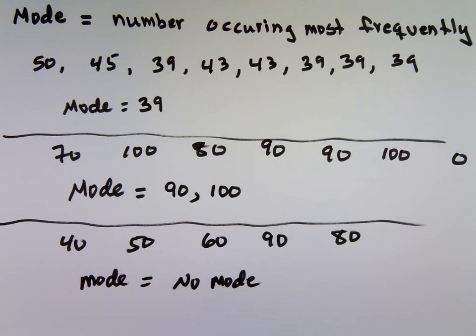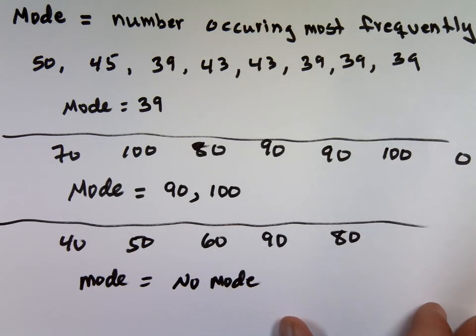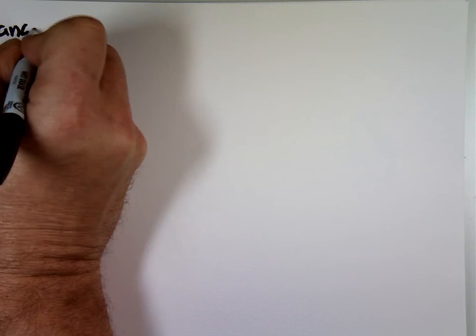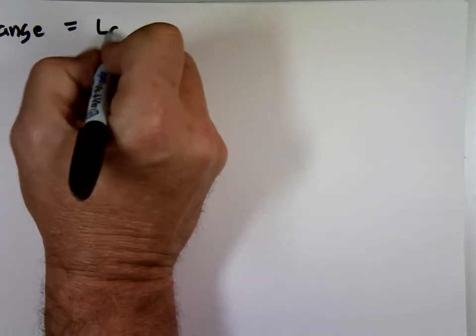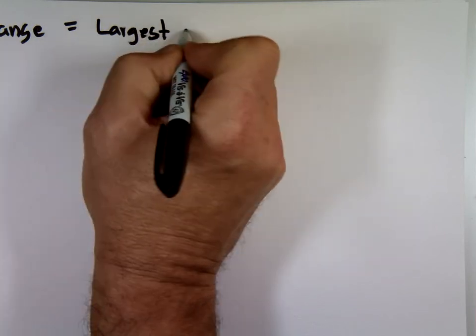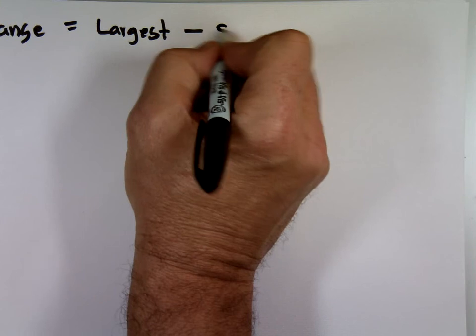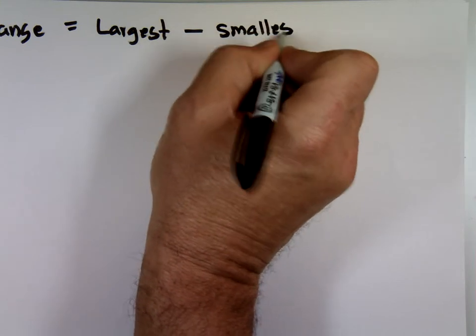The only other thing left is the range. Once we get the range, we're done. Mean, median, mode, and the range. The range is equal to the highest value minus the lowest value. The difference between, I'll just make it the largest value minus the smallest value.